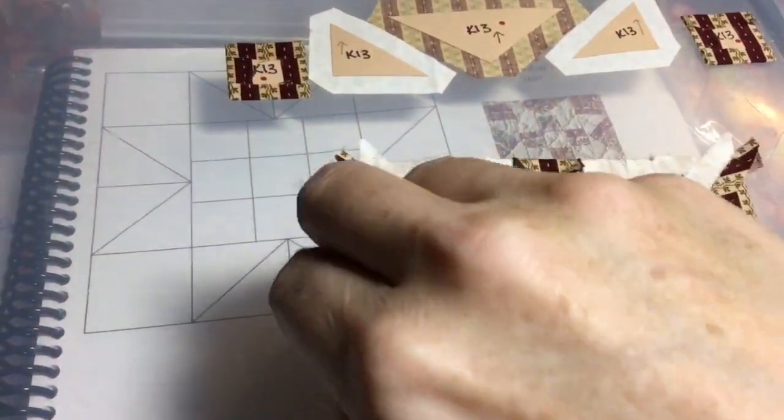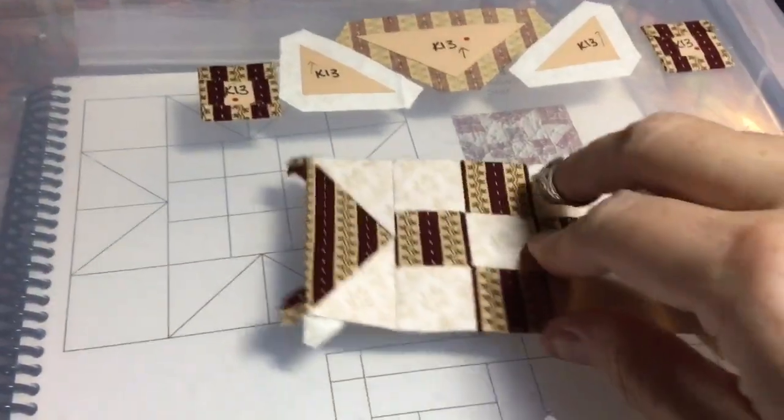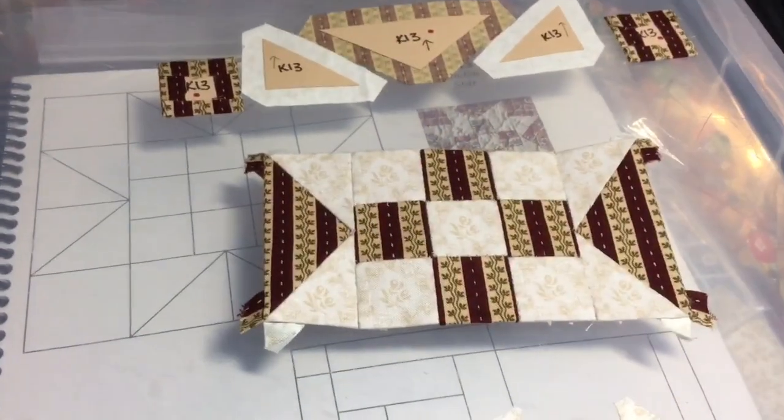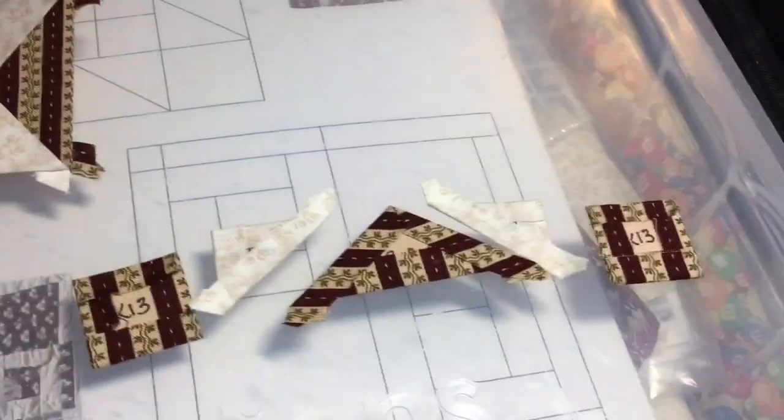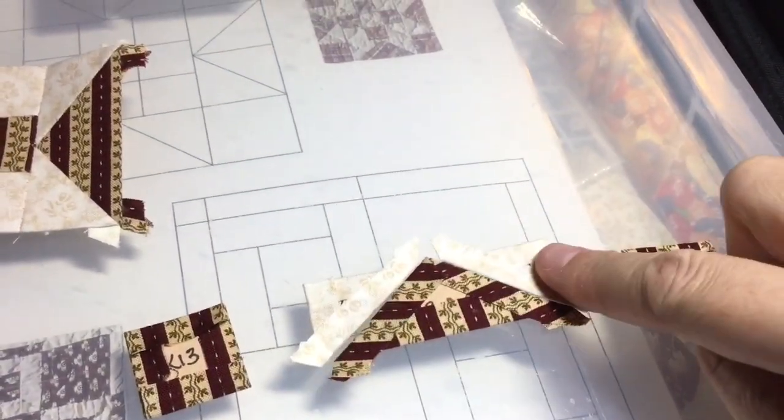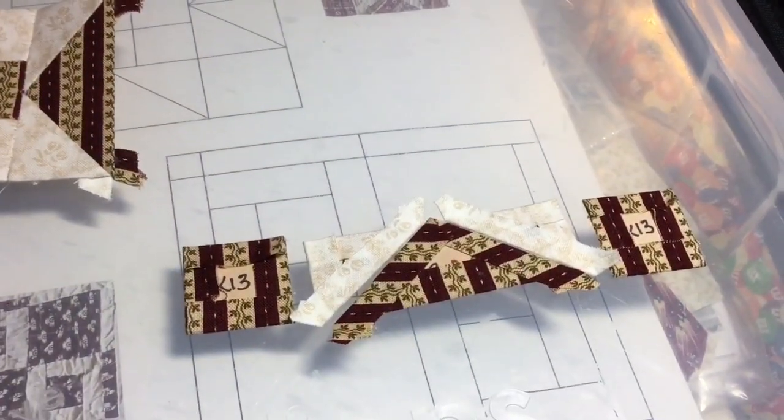So I've got this whole middle section assembled, and we've got all of my fabrics going the right direction. So I'm going to set this aside and work on the bottom row that I've got basted. So I'll stick these together and then attach the squares on either side.